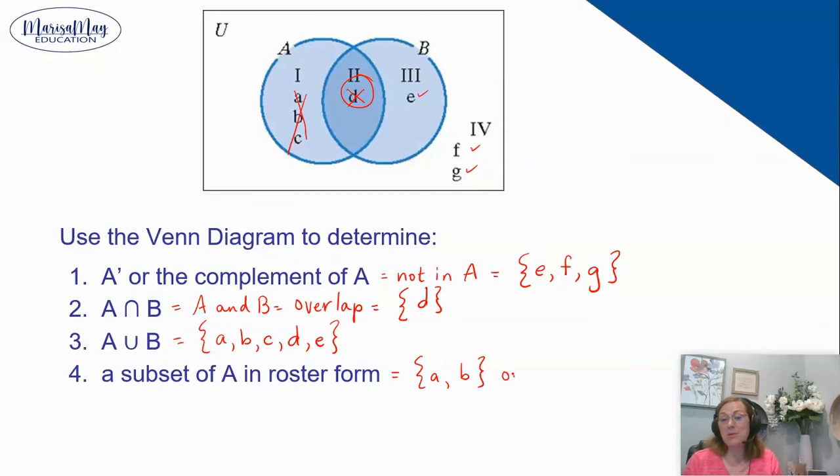Or maybe you would have made a circle around C and A, or maybe you would have made just a circle around A. See, all of these are subsets because they're all inside A and we just make a smaller group inside of that. That's what a subset is. I hope this helps with your set notation.